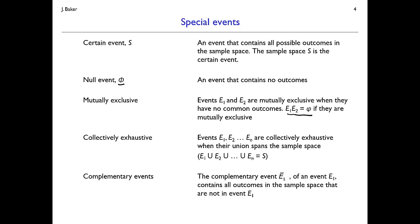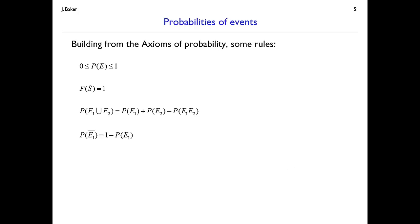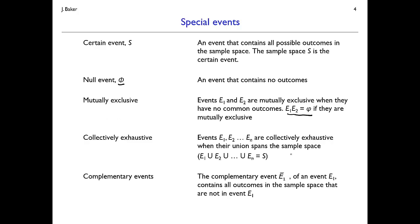Finally, we can define a complementary event. Given event E1, rather than defining a new event independently, we can refer to all outcomes not in E1. We denote that with an overbar on E1. This overbar represents the event of everything not in E1.